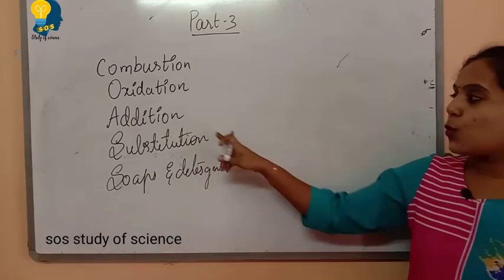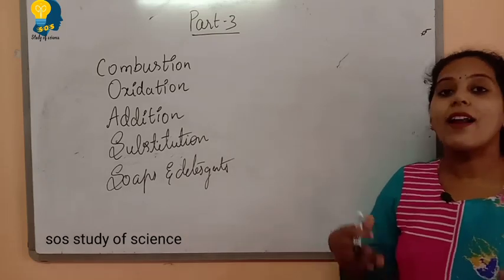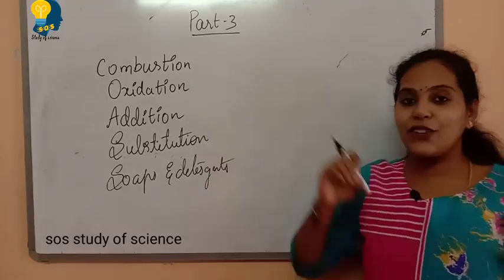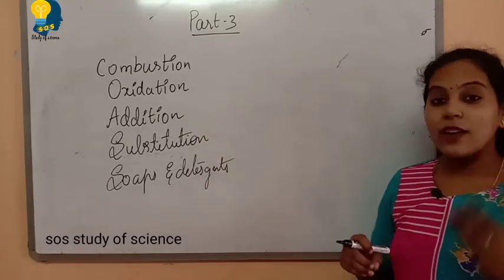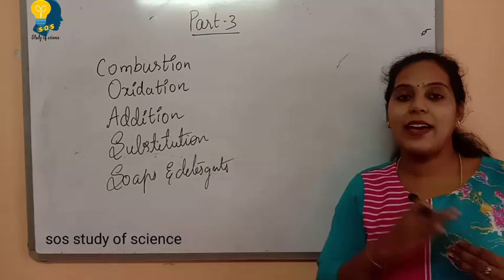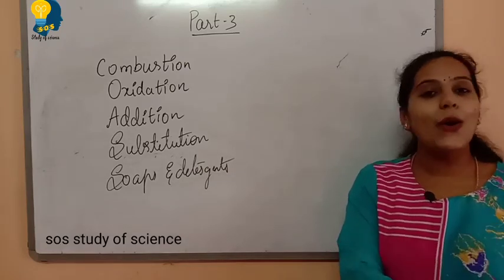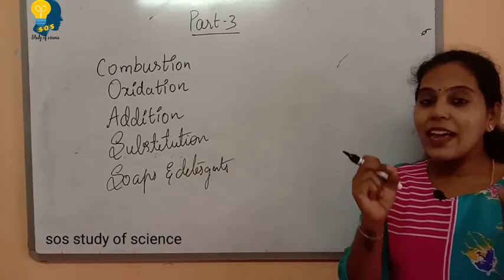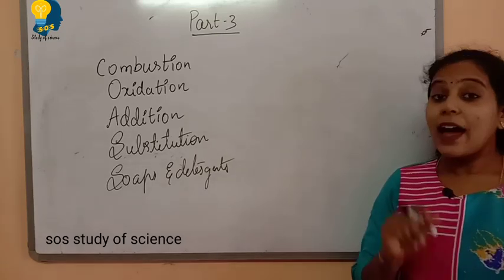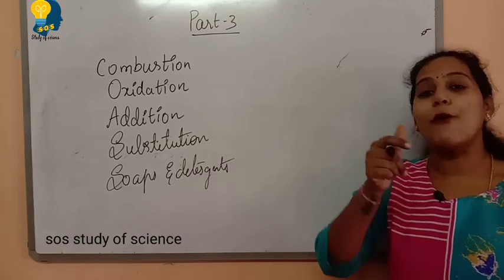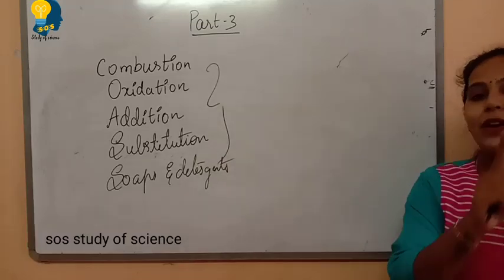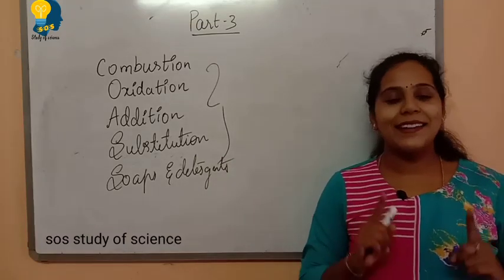Coming to addition reaction, they may ask 'What is meant by addition reaction?' or 'What is hydrogenation?' — both have the same answer. For oxidation, three types of questions may be asked: 'What is meant by oxidation reaction?', 'How can we convert ethanol into ethanoic acid?', or 'How can we convert alcohol into carboxylic acid?' The way of asking will be different but the answer remains the same, and the way of writing should be slightly modified. Understanding these concepts will definitely get you 7 out of 7.